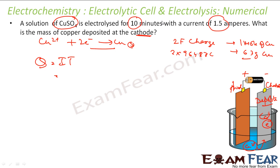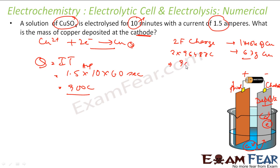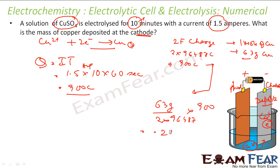Q = IT = 1.5 amperes × (10 × 60) seconds = 900 Coulombs. Now, 2 × 96487 Coulombs is required to produce 63 grams of copper. So with 900 Coulombs, the mass of copper deposited = (63 / (2 × 96487)) × 900 = 0.2398 grams. So passing 1.5 amperes for 10 minutes deposits 0.2398 grams of copper at the cathode.